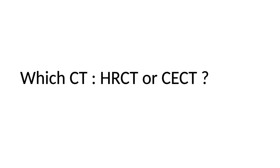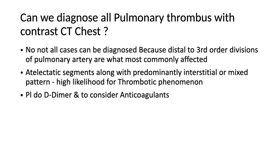Which CT — HRCT or CTPA? HRCT is very sensitive for detecting lung changes in COVID-19 pneumonia. Some may argue for CTPA as most complications are because of thrombus or microthrombus; however, the microthrombus causing various complications is generally distal to third-order divisions of the pulmonary artery — very difficult to catch by CTPA. So it should be HRCT first. If there is hemodynamic instability or sudden deterioration of saturation, you may suspect pulmonary embolism and go for CTPA — correlate with D-dimer levels and start anticoagulants. Thank you.